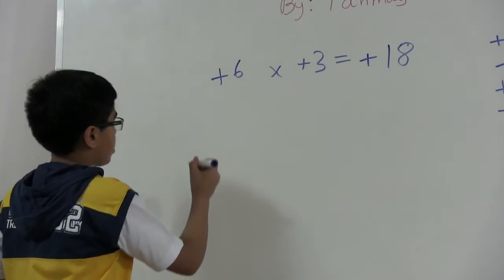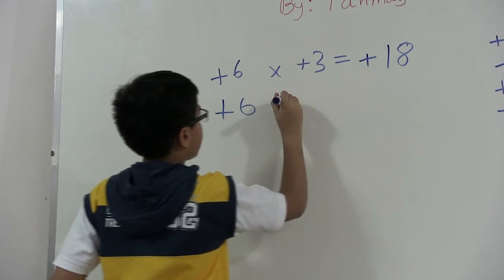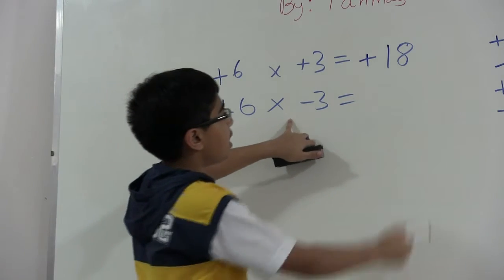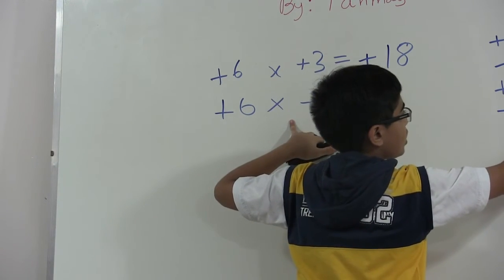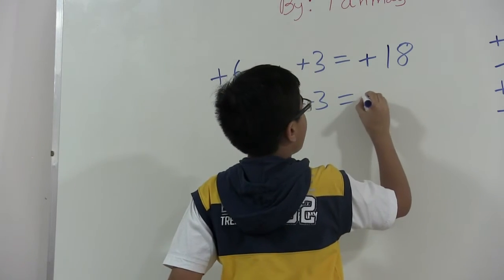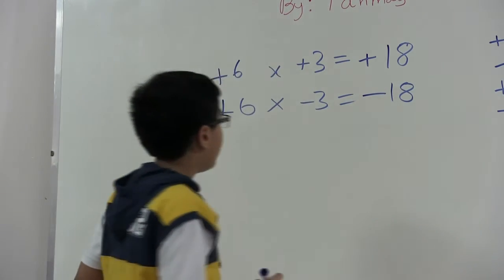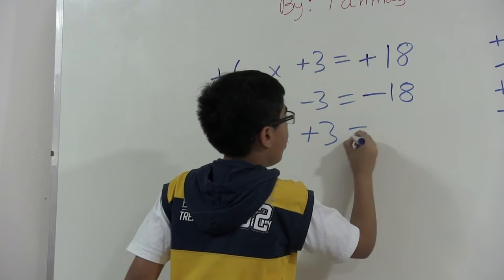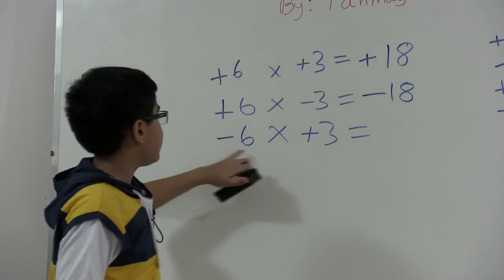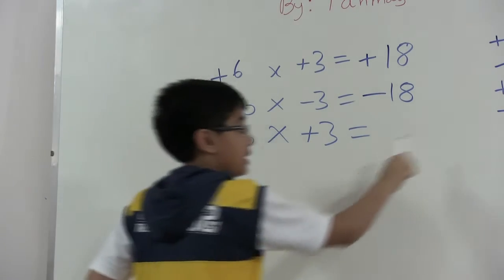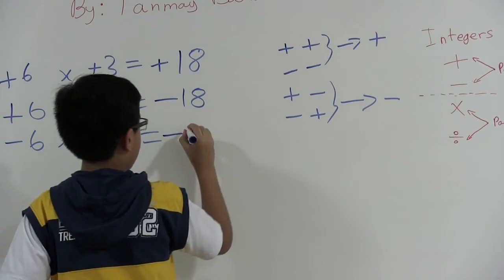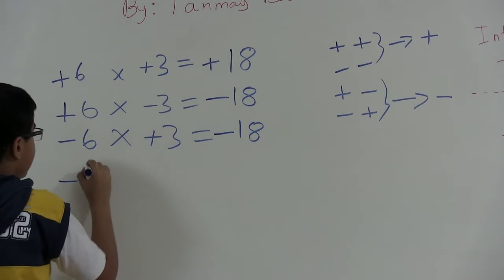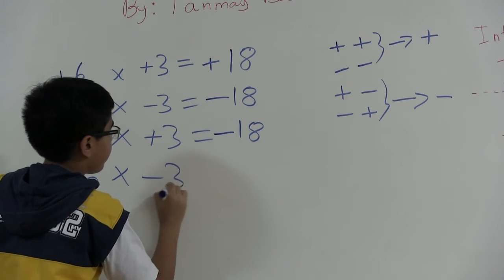Now let's say we have positive six times negative three. We have a plus and a minus — they're not the same — so they conflict and the result is negative, giving us negative 18. Next, negative six times positive three: again minus and plus are not the same, so the result is also negative 18.